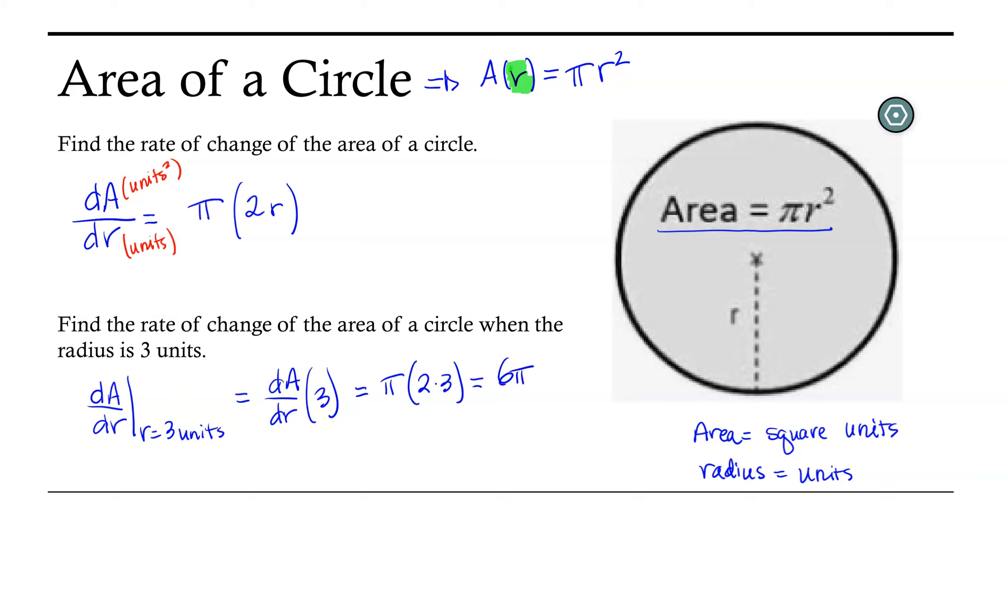Now this is a contextual situation, so we need to include units. Now this area changes with respect to radius, and it changes in units squared per unit.